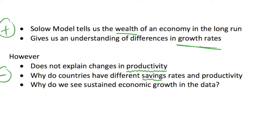Why does a poor country have a different savings rate? What is actually causing them to have different wealth in the long run? And the other question is: why do we see sustained economic growth in the data? If you look at macroeconomic data for countries right now, although we may currently be seeing recessions, in general we see long-term growth and countries taking off. So why do we see that when the model doesn't necessarily predict this?